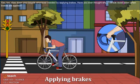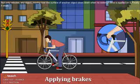Have you ever thought why a vehicle slows down when brakes are applied? Not only vehicles, any object moving over the surface of another object slows down when no external force is applied on it. Finally, it stops.